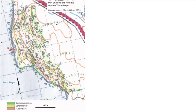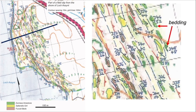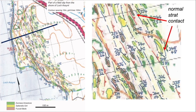Our task is to interpret this field map — part of a field slip from the shore of Loch Assynt, mapped over about two-thirds of a day, showing the distribution of rocks. Rock outcrops are shown in a harder shade surrounded by a green line where observations were made, and inferred geology between them is shown in a lighter shade. Our task is to draw a cross section. Zooming into the map, you can see individual bedding symbols with strikes and dips, thrust contacts shown by the pecked red line, and stratigraphic contacts shown by the pecked blue line. Only the outcrops within the green lines are known for certain — everything else is inferred to make a map pattern that makes sense.